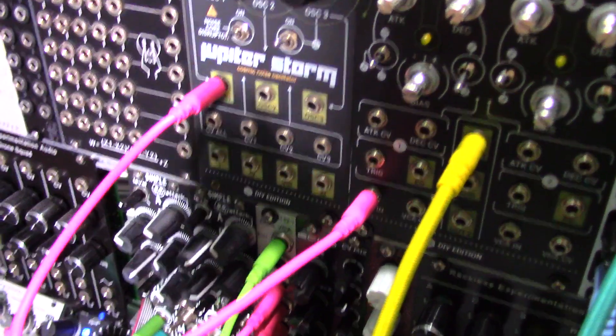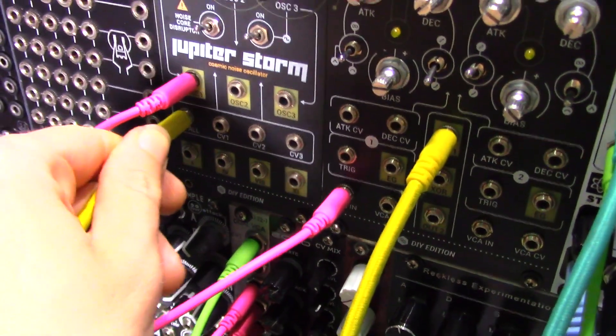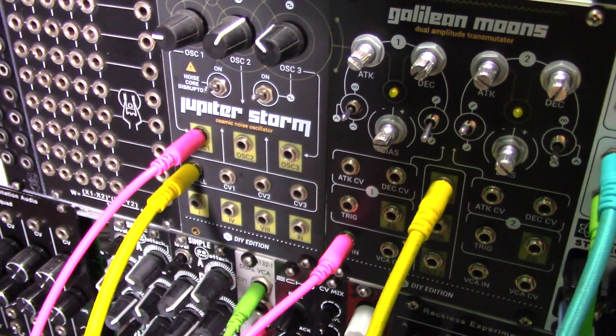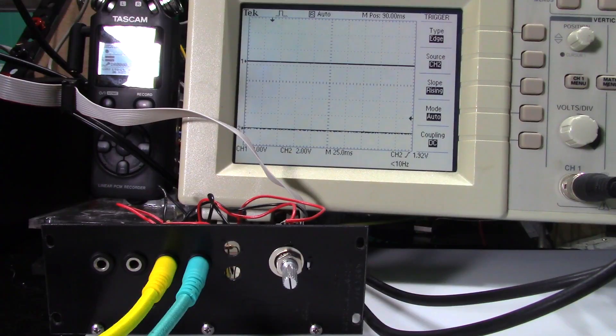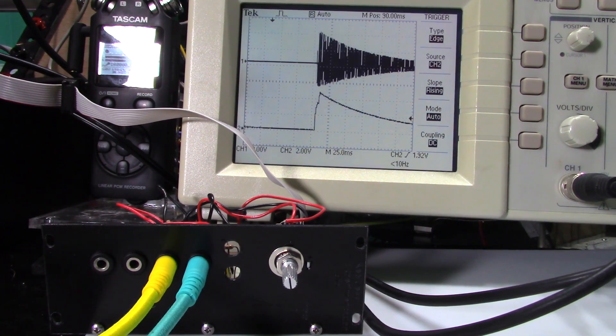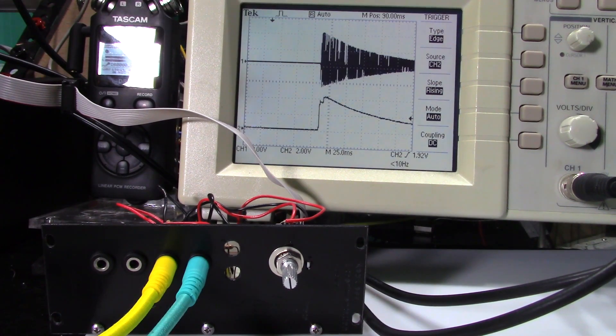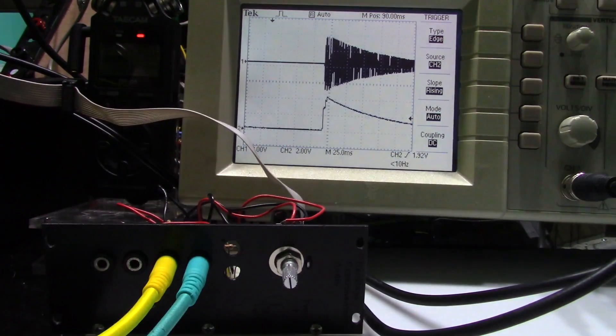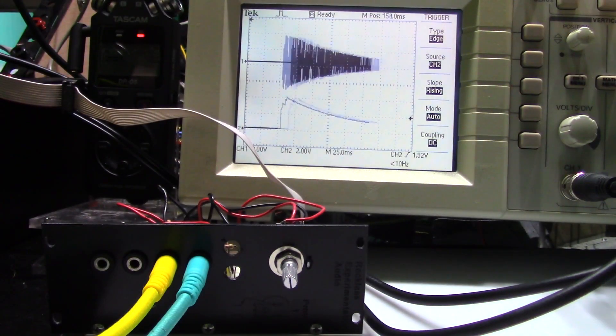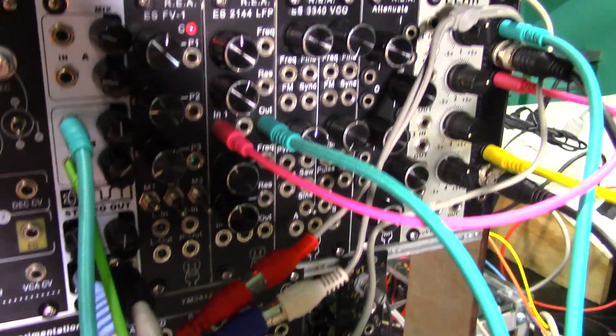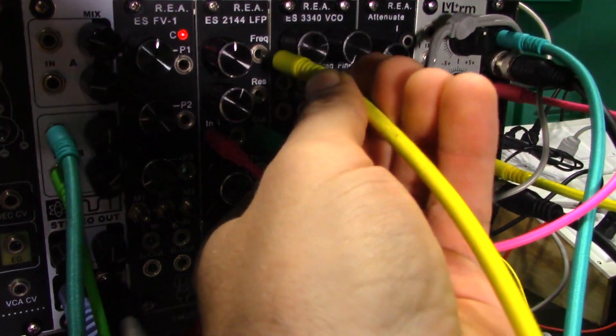So what can we do with this? Patch it back into the VCO used for the signal source for an effect like this. Or you can patch the envelope into a voltage controlled filter for an effect like this.